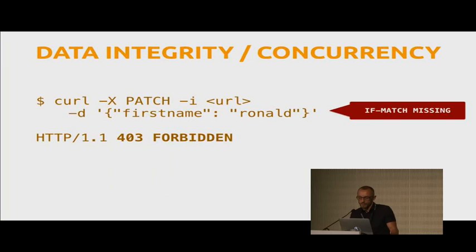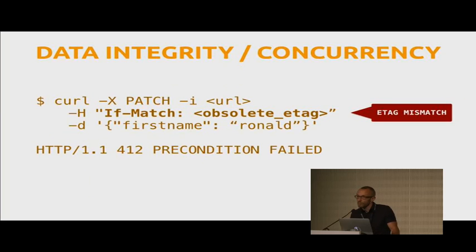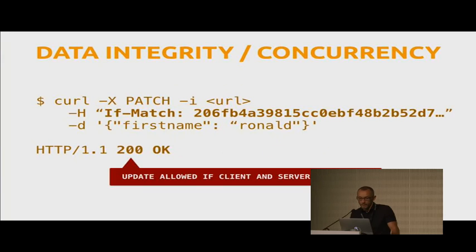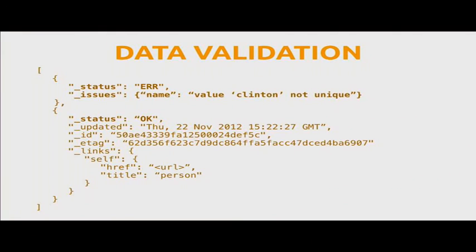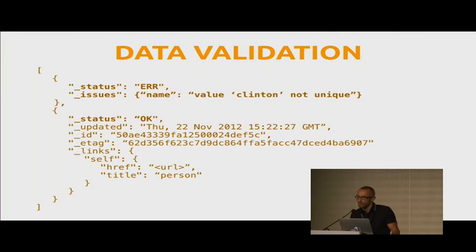On data integrity and concurrency control, we use ETags for integrity checks. When you try to modify a document, if you don't provide the If-Match header, you get a 403 back. If you send an ETag that doesn't match the server's ETag, you get a 412 Precondition Failed. If you provide the matching ETag, the edit goes in. This prevents a client with an old version of a document from overwriting a newer version on the server. For data validation, here is a bulk insert response where the first document got an error — the name is not unique — but the second document was accepted.